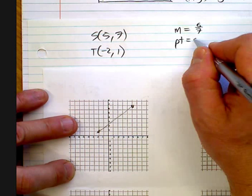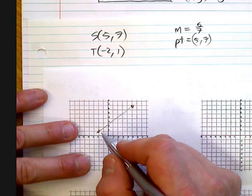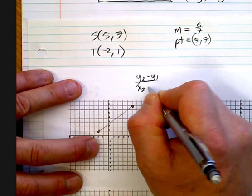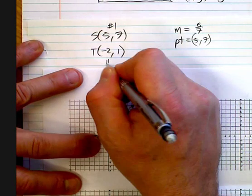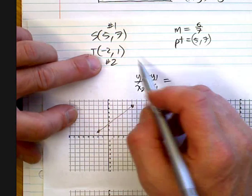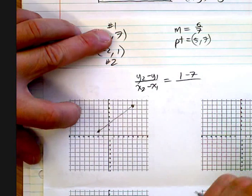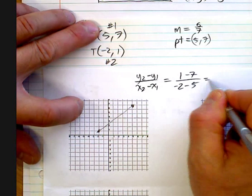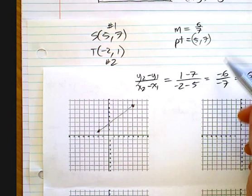Now if you couldn't find the slope that way, you could do y2 minus y1 over x2 minus x1. It doesn't matter which you call point 1 and which you call point 2, as long as you stay consistent. So y2 minus y1 is 1 minus 7, and x2 minus x1 is negative 2 minus 5 — that's negative 6 over negative 7, which is 6 over 7. Same thing.